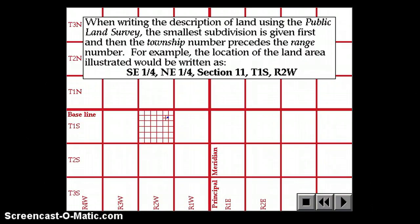When writing the description of land using the public land survey, the smallest subdivision is given first and then the township number precedes the range number. For example, this little flashing thing right there is part of the southeast quarter of the northeast quarter of Section 11 of T1S, R2W. That's the type of description that you might see on a property deed or a tax statement.